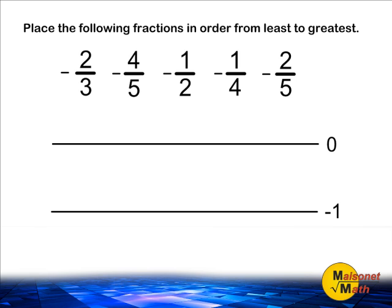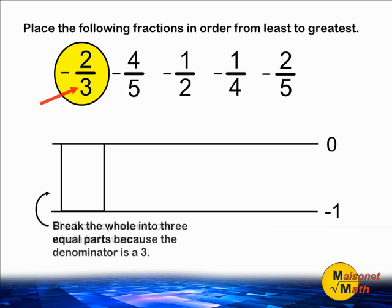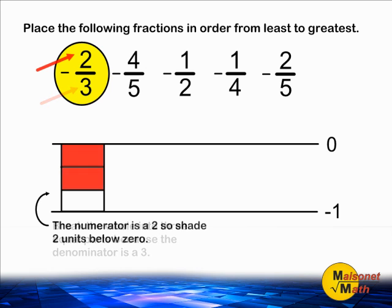The first thing we're going to do is take our first fraction, which is negative two-thirds. We're going to start by drawing one whole rectangle underneath two-thirds that falls in between zero and negative one. We take this box, which represents one whole, and divide it into three equal parts because our denominator is three. After dividing our whole into three equal parts, we are going to shade two units directly below the number zero. This diagram represents two-thirds below zero.